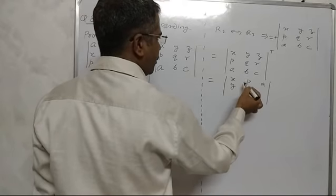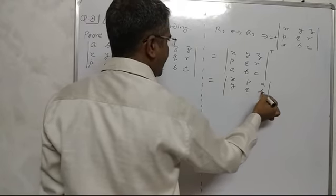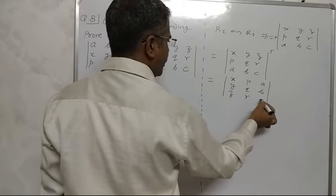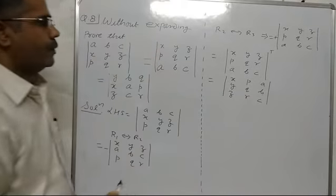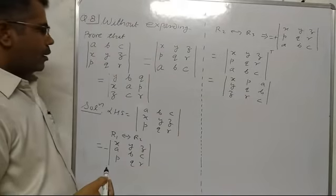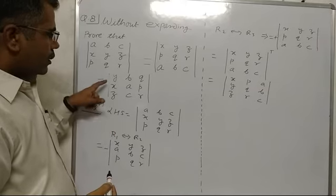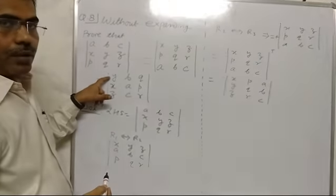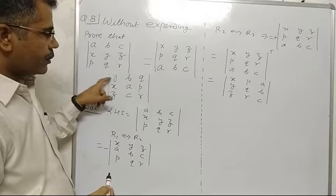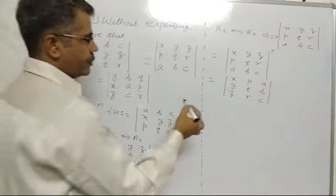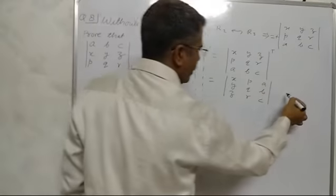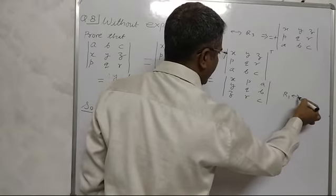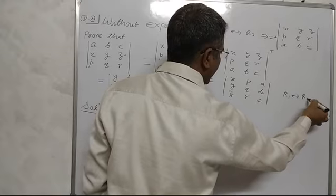After transposing, we get the determinant with elements rearranged: X, Y, Q, B, Z, R, C. Here Y requires the first row, so we apply R1 interchange R2.